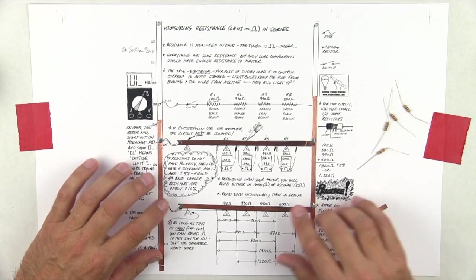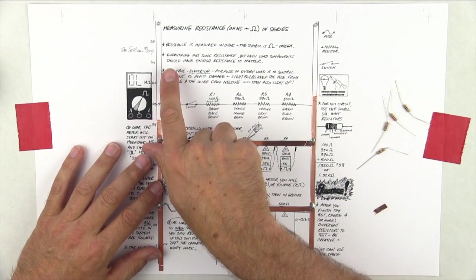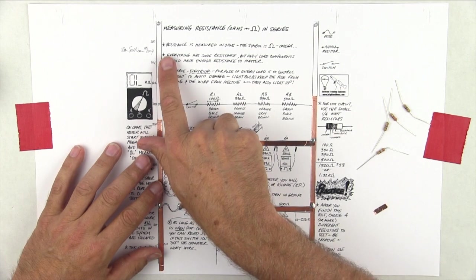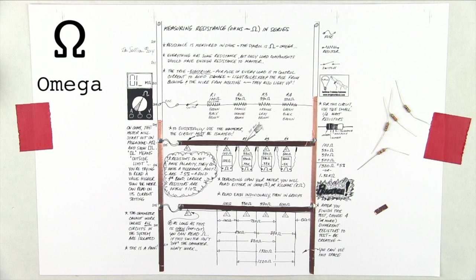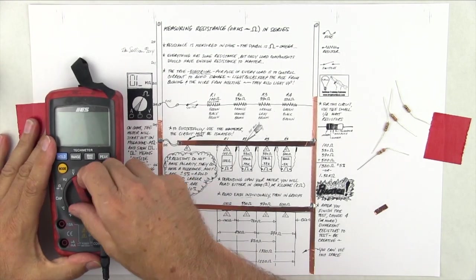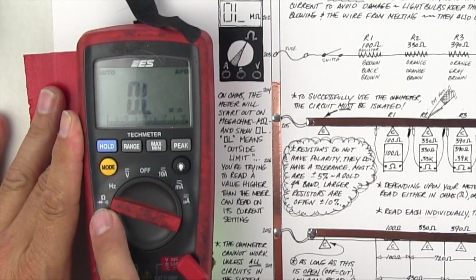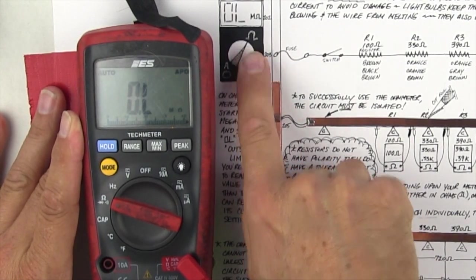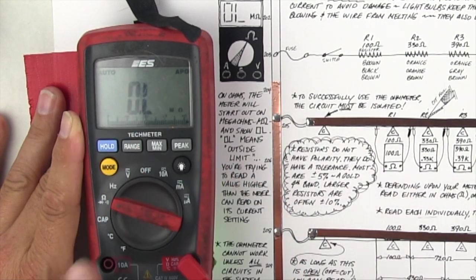What I've got here is the board set up, and the notes are resistance is measured in ohms, and the symbol is the Omega symbol. On the meter here, we'll turn it on ohms. So we've got it on ohms, that's the Omega symbol. I have it on auto range, and that's where I'm going to leave it.